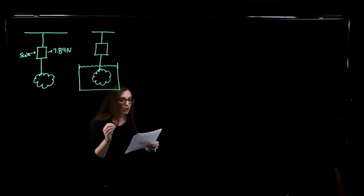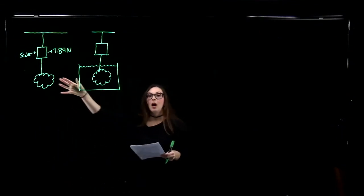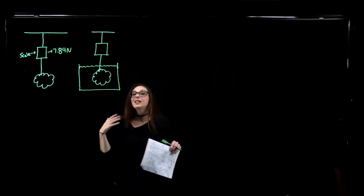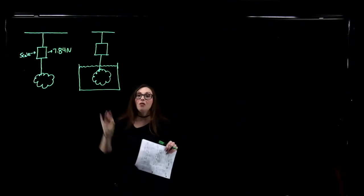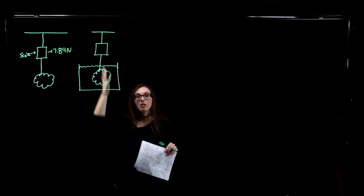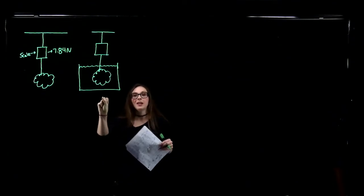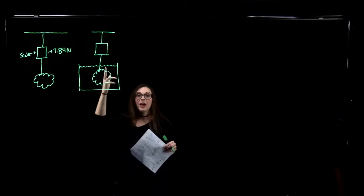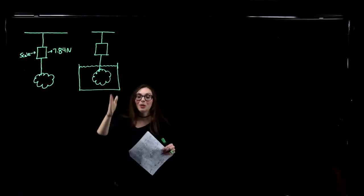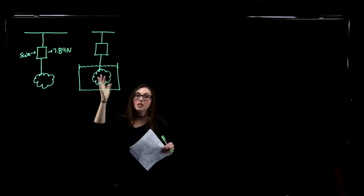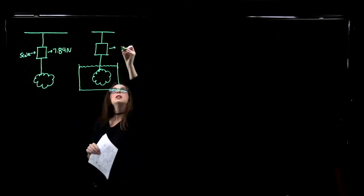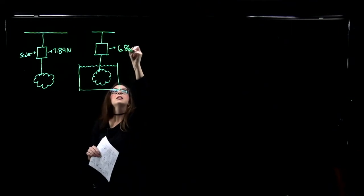Then she weighs the object, but this time submerging it in water. So this object is more dense than water, and if it weren't connected to the scale by a string or a hook, that object would sink to the bottom. But it's connected to the scale by a hook. The measurement that the scale reads is what we call the apparent weight of that object when it's submerged in the liquid. When she submerges the crown, the reading on the scale is 6.86 newtons.